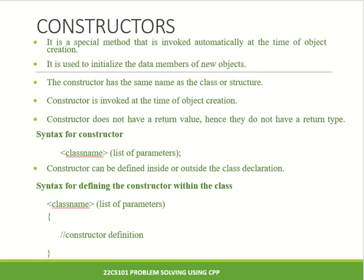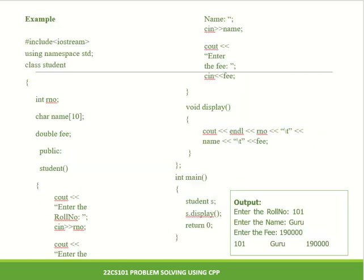The syntax for defining the constructor within the class is: class name, then list of parameters, then within curly braces you mention the definition for the constructor. Here we have one example. The header file is included, then using namespace std. Then you define the class — the name of the class here is student. You have the variables like rno, name, and fee. Within the class, you declare integer roll number, character name of size 10, and double fee. Under the public specifier, you declare or define the constructor.